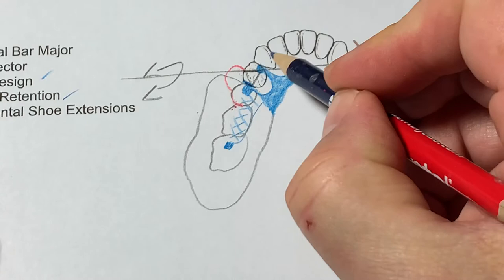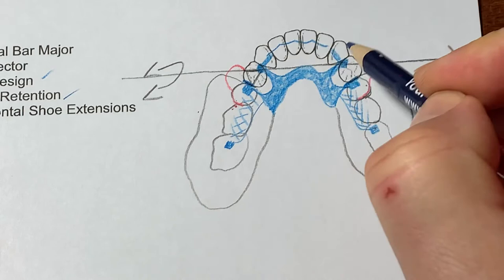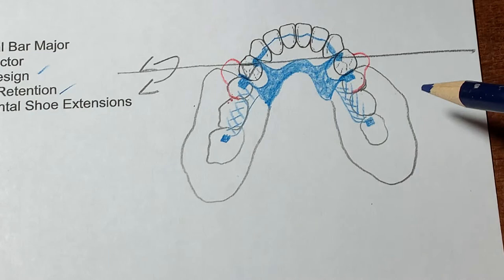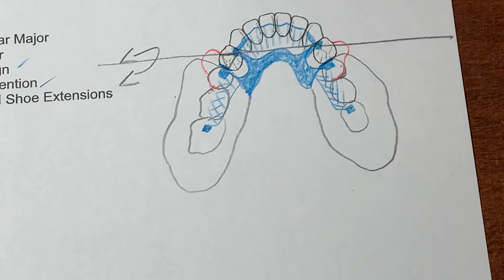If we choose to have some indirect retention, as a minimum, this design should incorporate a cingulum rest, as a minimum. If we wanted to do more, we could go with the Kennedy bar, or the double-lingual bar, or the superior bar, on the cingulums of 3-3 to 4-3 collectively. If we wanted even more, we could even plate this whole area with a lingual aproning.